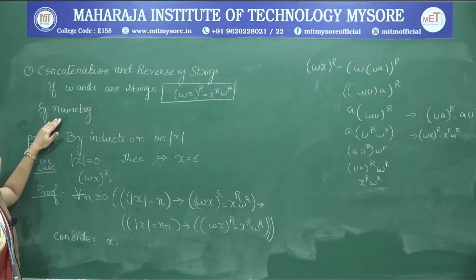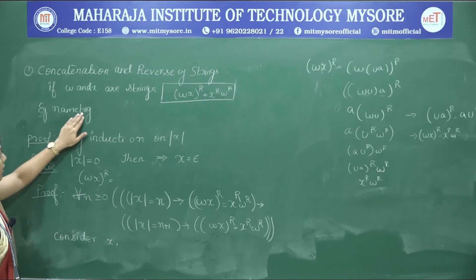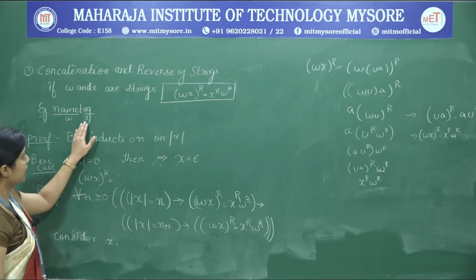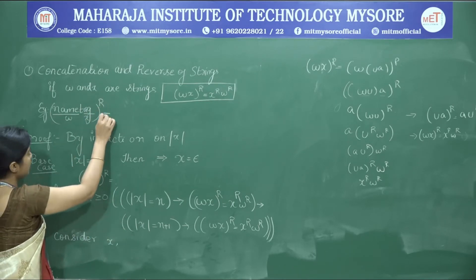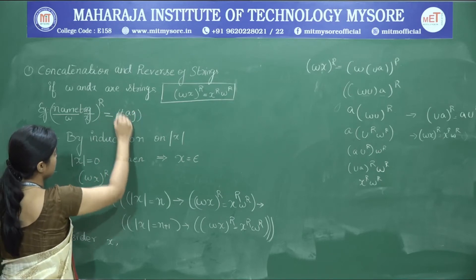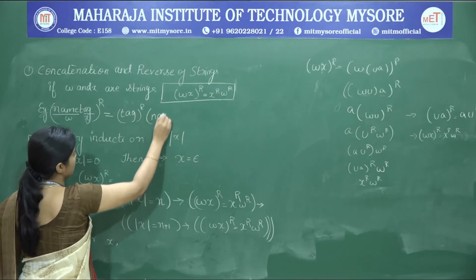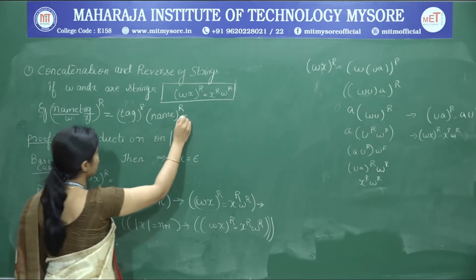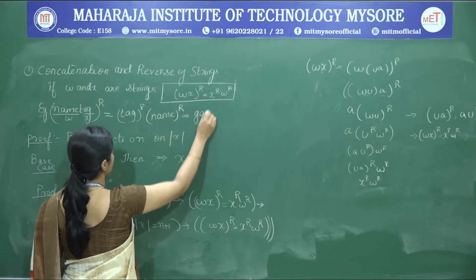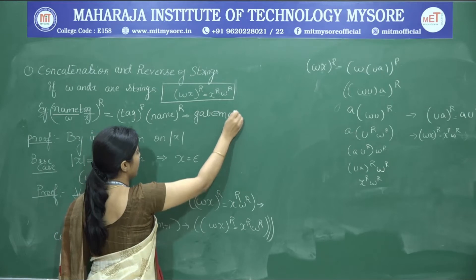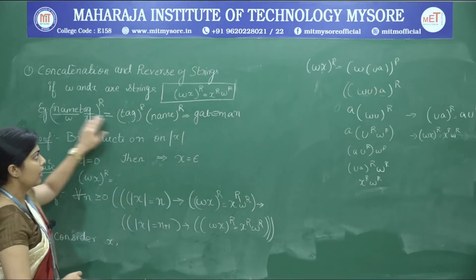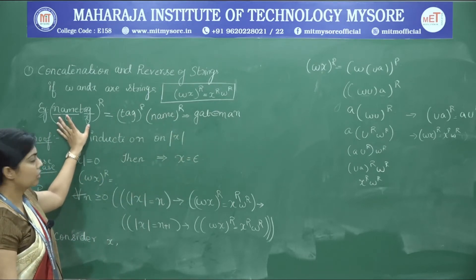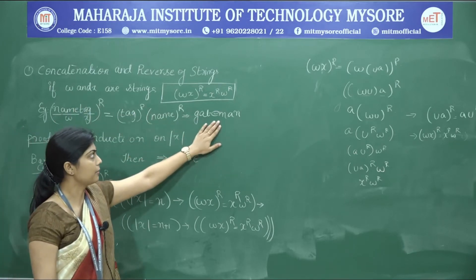We'll see this with an example. 'Nametag' is one word that can be divided into w = 'name' and x = 'tag'. So (nametag)^R equals tag-reverse concatenated with name-reverse. Reverse of 'tag' gives 'gat' and reverse of 'name' gives 'eman'. Checking the original word against the conclusion, the entire string 'nametag' is reversed, confirming the identity.